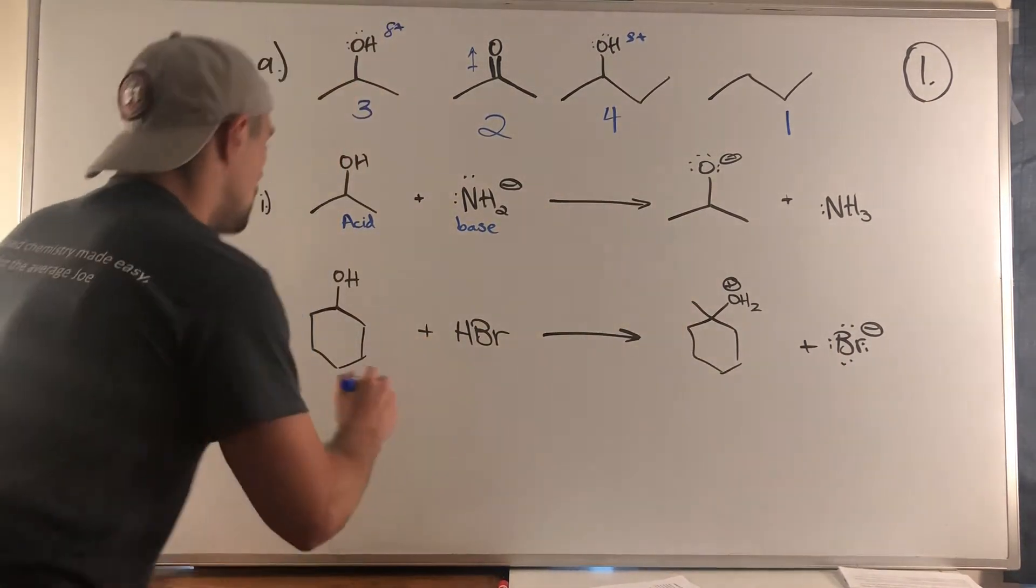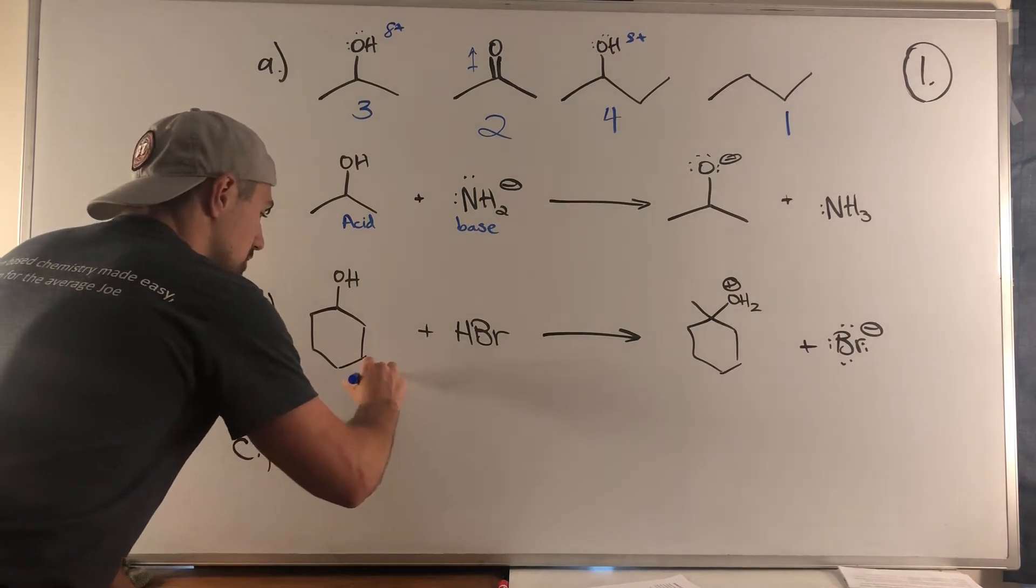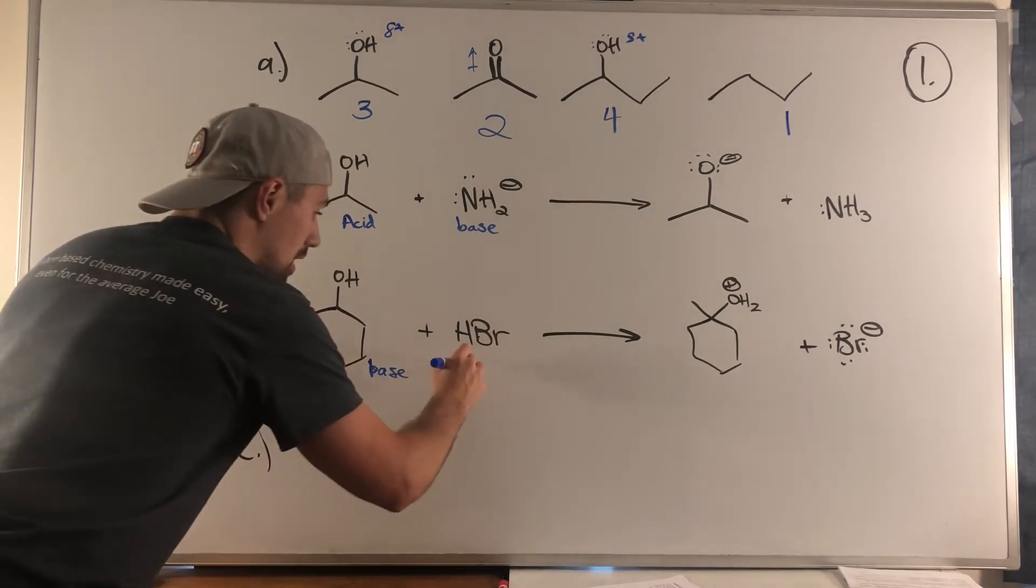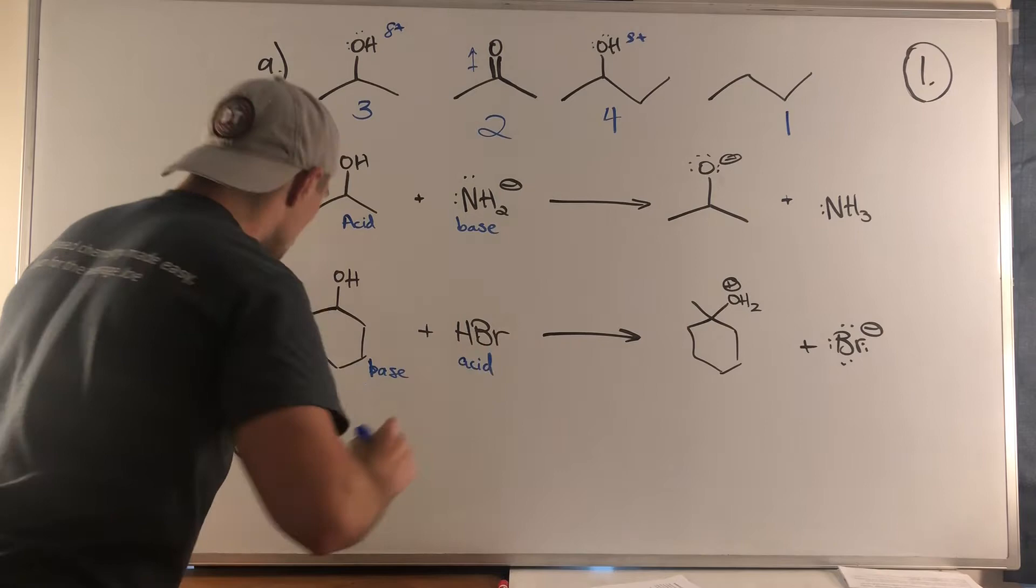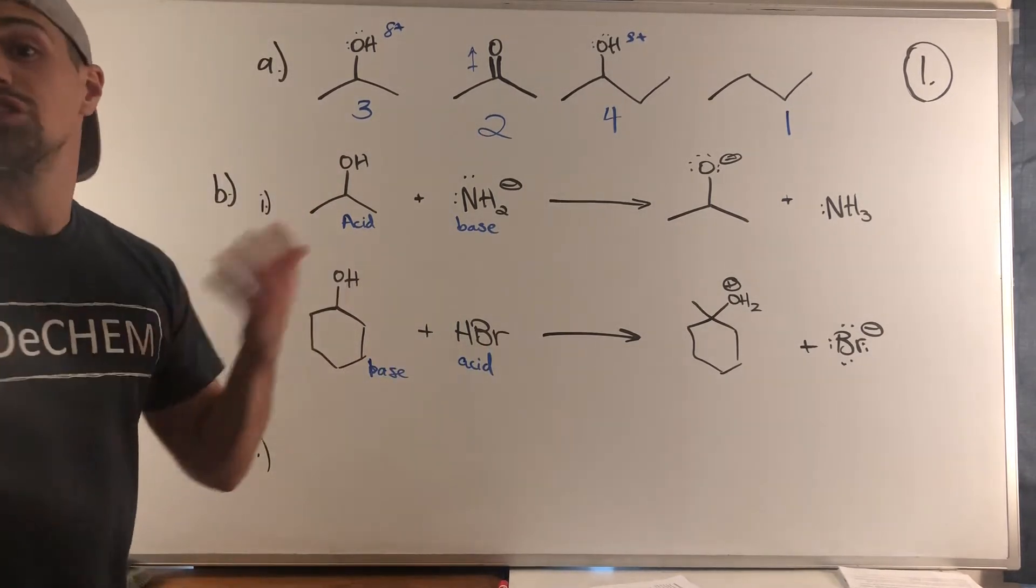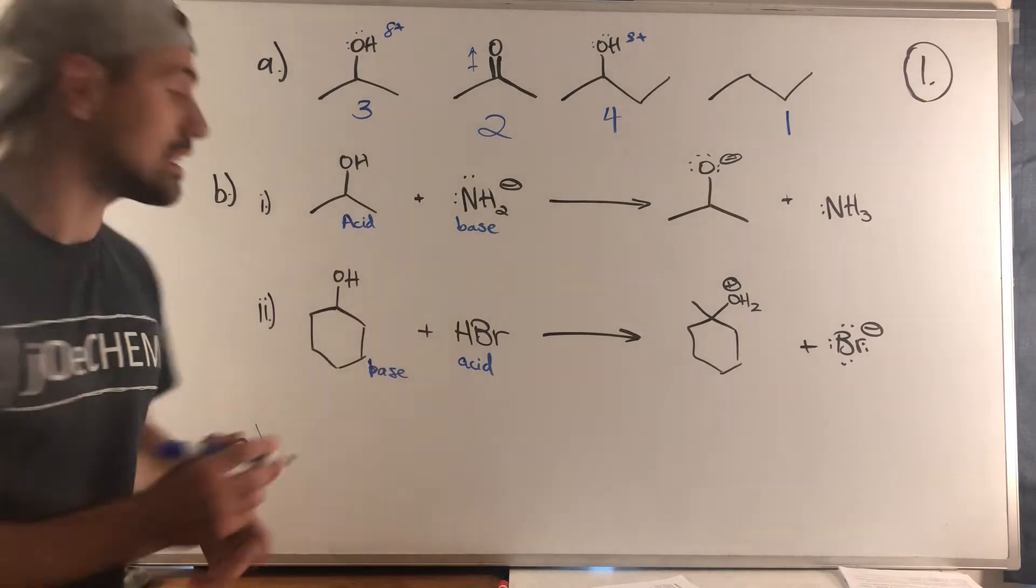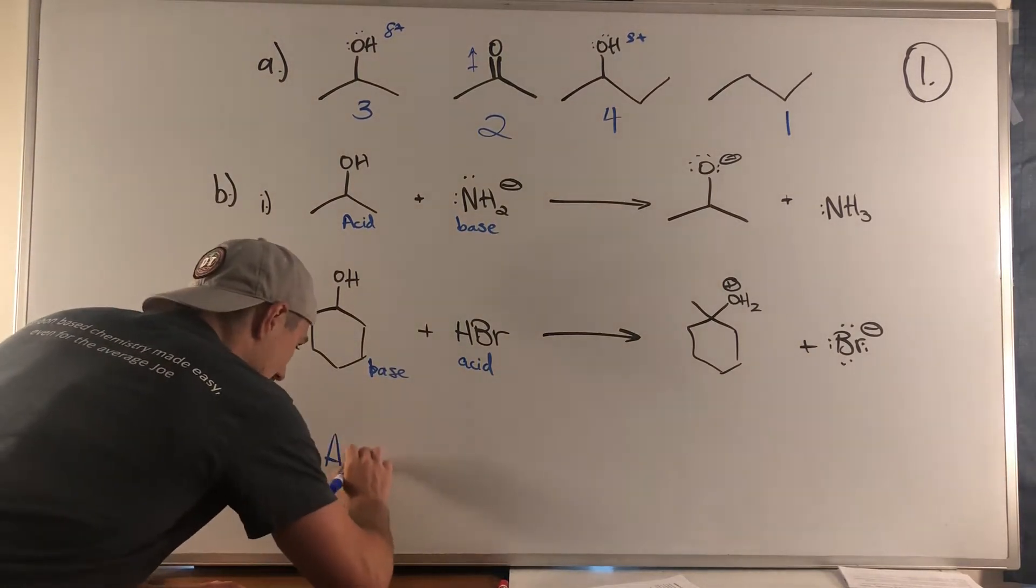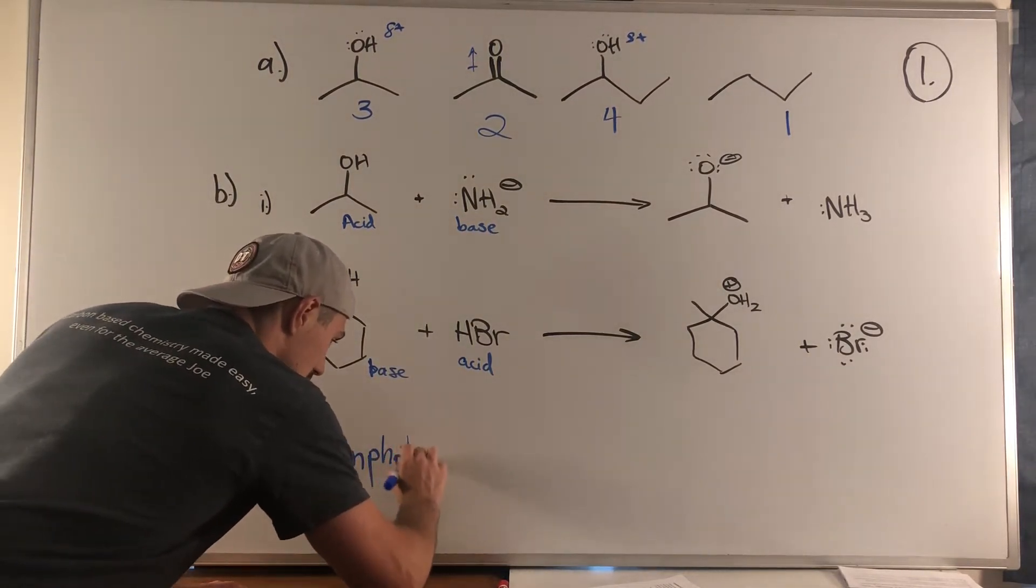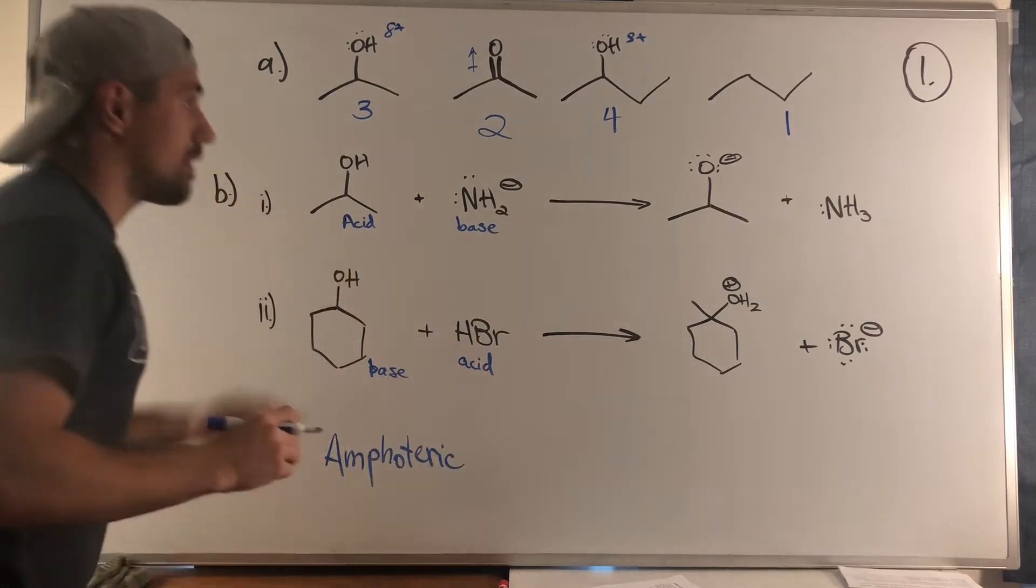But in this problem we can see the alcohol is picking up H+, so this is the base and HBr is the acid. Part C asks what's the word for this dual behavior where something can act as both an acid and a base - that means it is amphoteric.